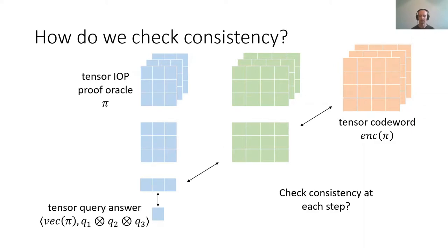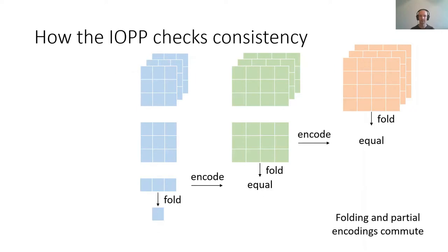The idea behind our consistency test is that we check consistency diagonally. At every step, we have something which has been partially folded up and less and less encoded compared with the original tensor codeword, and we want to check consistency between all of these intermediate values. In the actual IOP of proximity that we design, we make use of the fact that the folding operation and partial encodings can commute with one another. So we check consistency between these intermediate values by encoding one and folding the other and checking that the two answers are equal to one another.